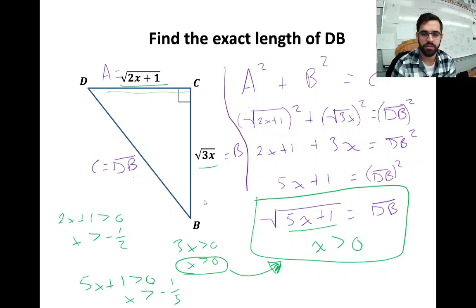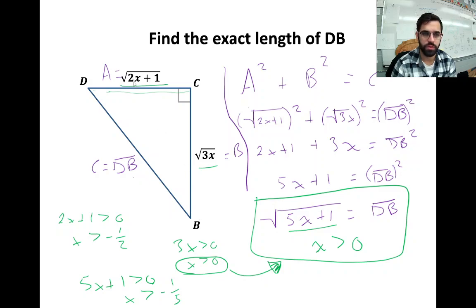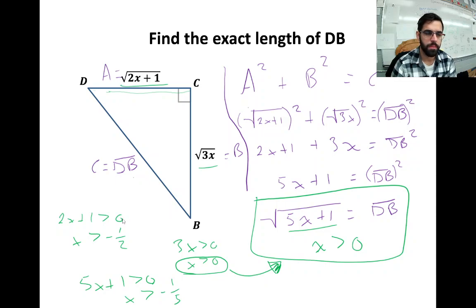Now we have expressions for multiple sides in terms of x, so we have several domain restrictions to check. The length of any side of this triangle must be greater than 0. So 2x + 1 > 0 means x > -1/2. For side CB, 3x > 0 means x > 0. This is more restrictive — BC is more restrictive than CD — so we'll go with this domain restriction between the two.